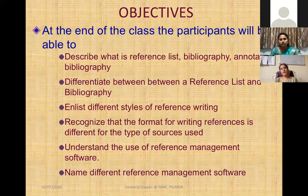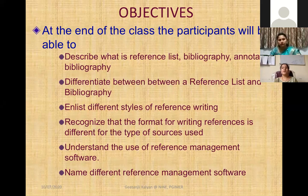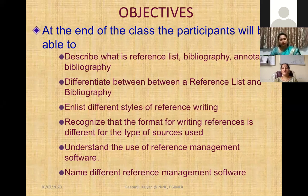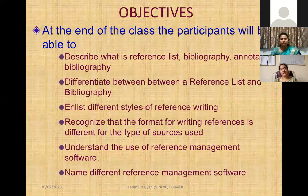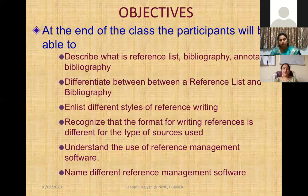For today's session, the objectives are: at the end of the session, participants should be able to describe what a reference list is, what bibliography is, and what annotated bibliography is — these three things are different and students often get confused. They should also be able to differentiate between a reference list and bibliography, list different styles of reference writing, recognize that the format for writing references is different for different types of sources, and understand the use of reference management software and name different reference management softwares.